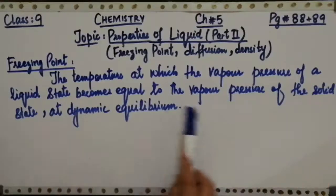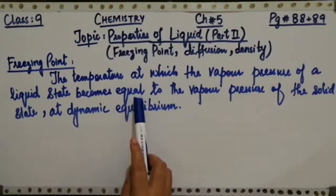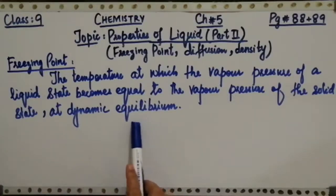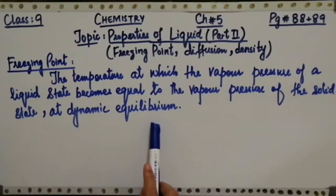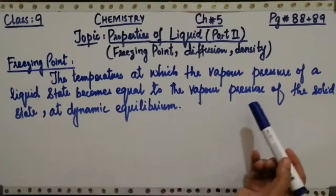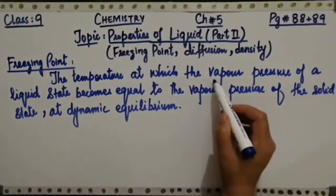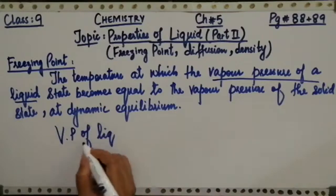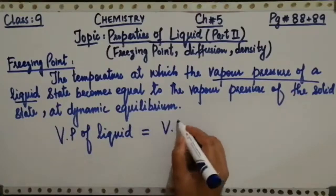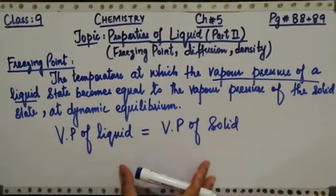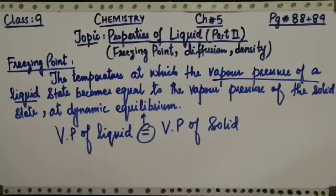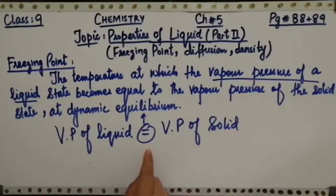Dynamic equilibrium is like a balance where both sides are equalized. If you place the vapor pressure of liquid on one side, that is VP of liquid, it becomes equal to the vapor pressure of solid. This equality is called dynamic equilibrium. So freezing point is that temperature at which the vapor pressure of liquid becomes equal to the vapor pressure of solid, and this is achieved at dynamic equilibrium.